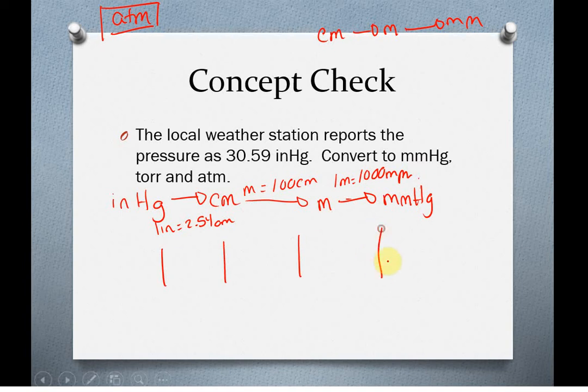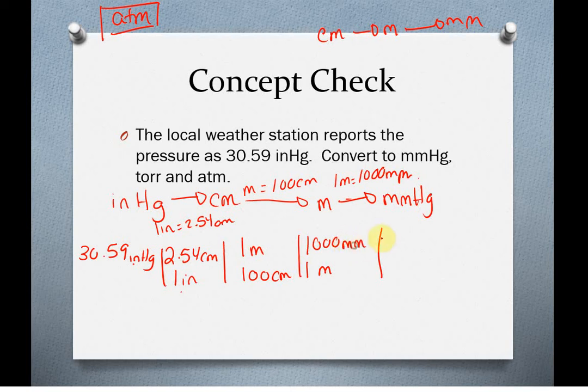We know that every meter has 100 centimeters and every meter has 1,000 millimeters. We have this three-step problem which is technically longer than I like on an exam, but for here it's fine. So we have 30.59 inches mercury. We know every time we have 1 inch, so we're putting inches down here to cancel, we get 2.54 centimeters. Every time we have 100 centimeters, we have 1 meter. And 1 meter is the same as having 1,000 millimeters. We're going to plug it into our calculator where we have 30.59 times 2.54 times 1,000 divided by 100. You get something like 777 millimeters mercury.